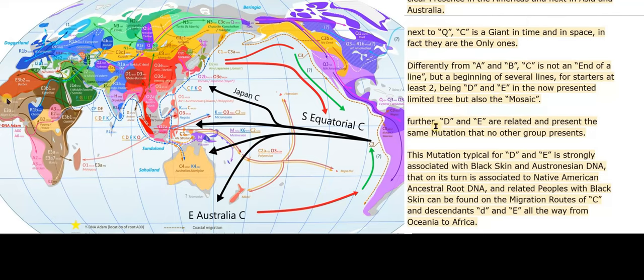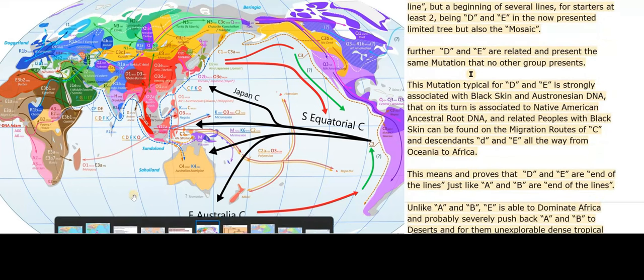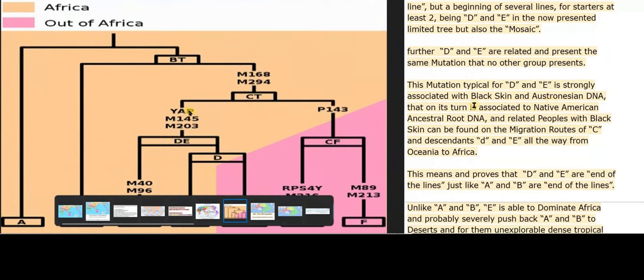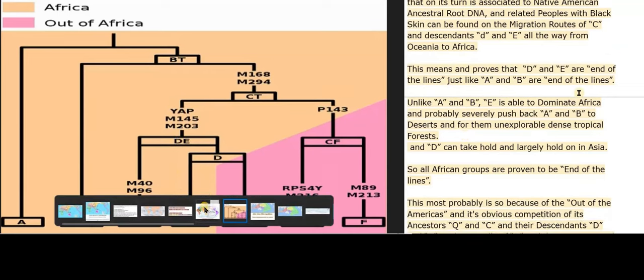Further, D and E are related and present the same mutation that no other group presents. This mutation, typical for D and E, is strongly associated with black skin and Austronesian DNA, which in turn is associated with Native American ancestral root DNA. Related peoples with black skin can be found on the migration routes of C and descendants D and E all the way from Oceania to Africa. This means and proves that D and E are end of the lines, just like A and B.